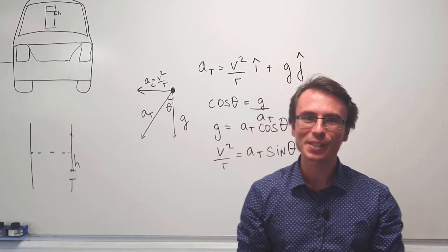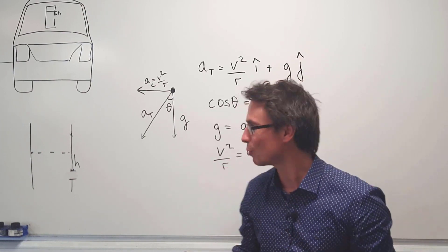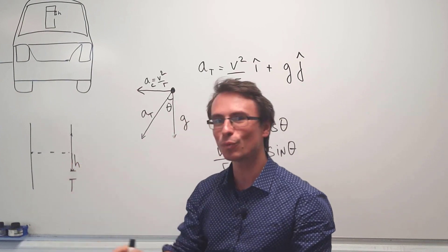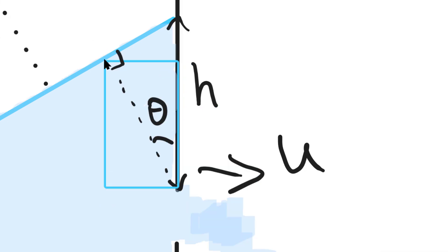Now one of the key components of this question is to imagine what will be happening to the height of the water in the vertical direction. Because the car is turning, the surface of the water will also be at an angle theta to the vertical. In a way we can think of this line here as the effective height of the water. Should we just call this one H prime?